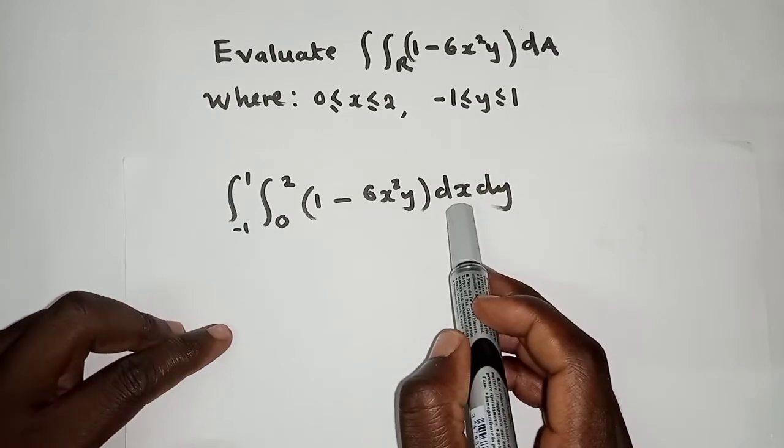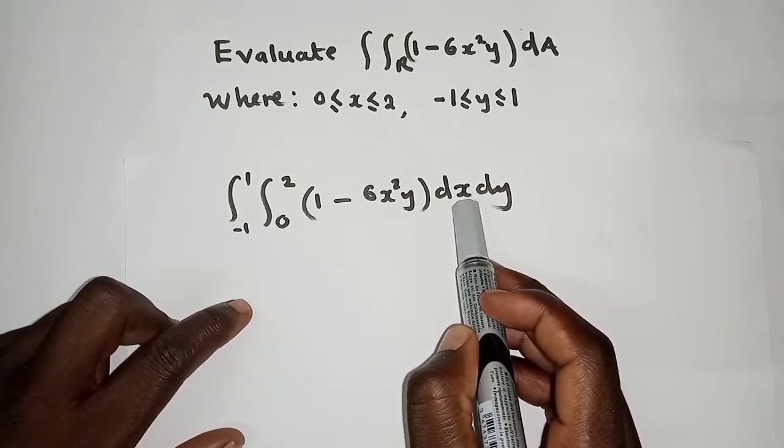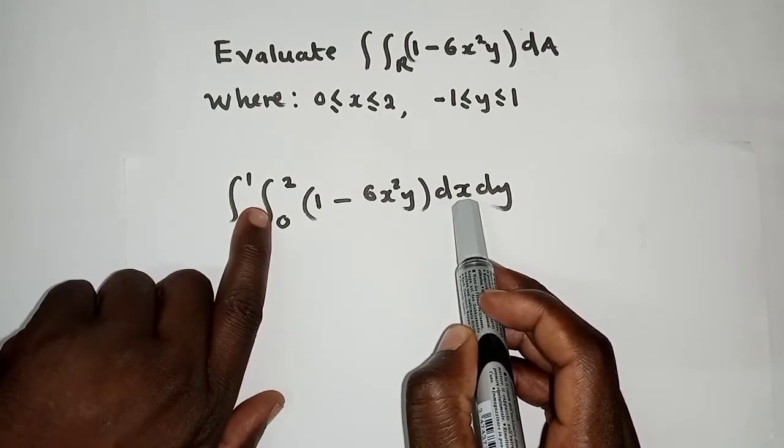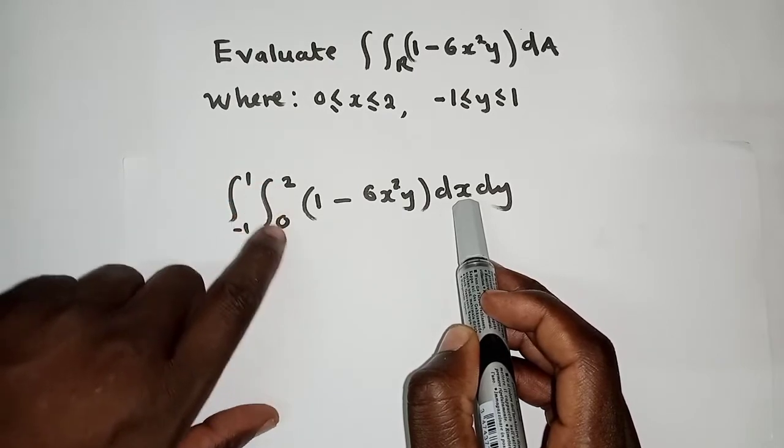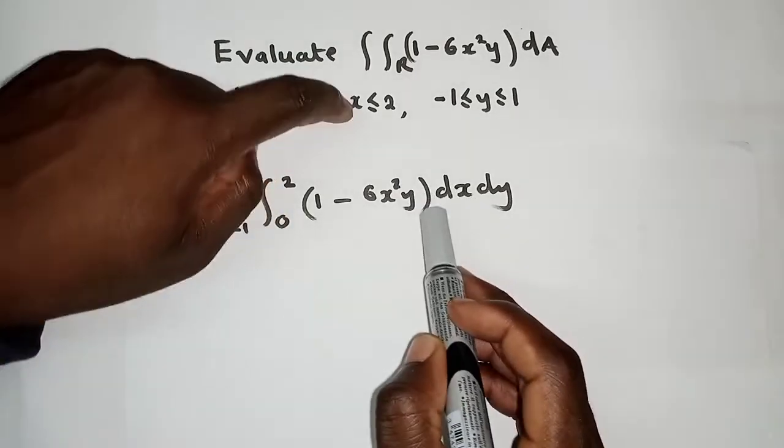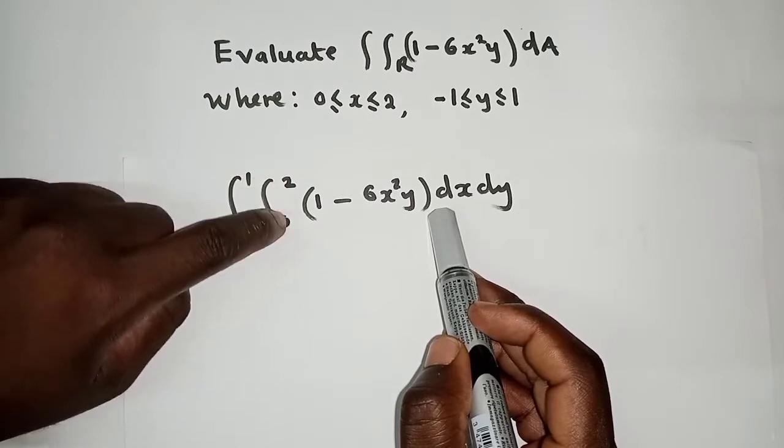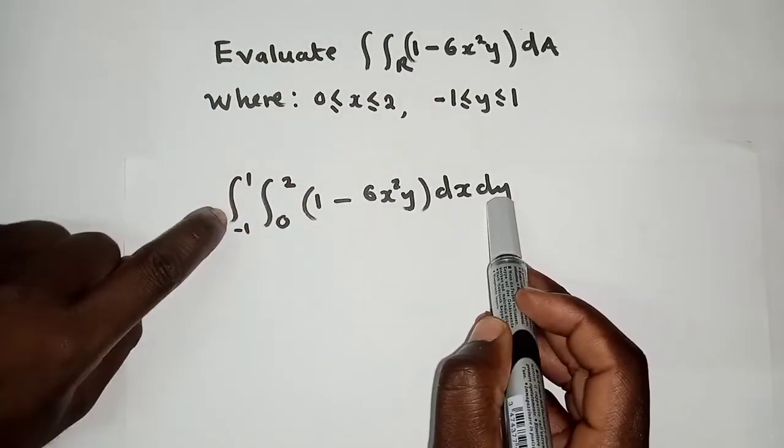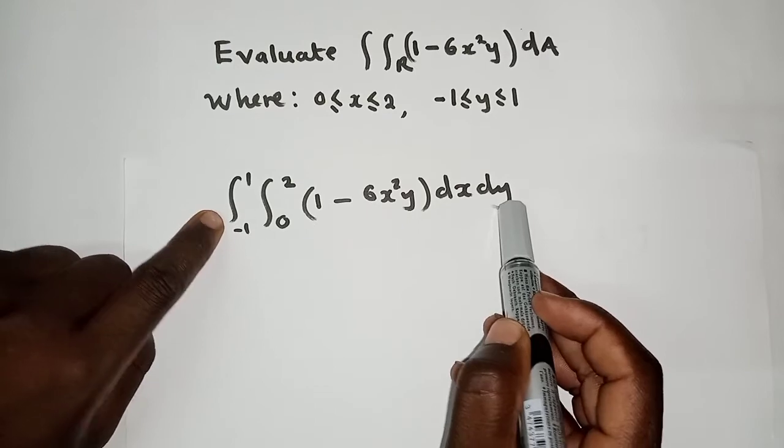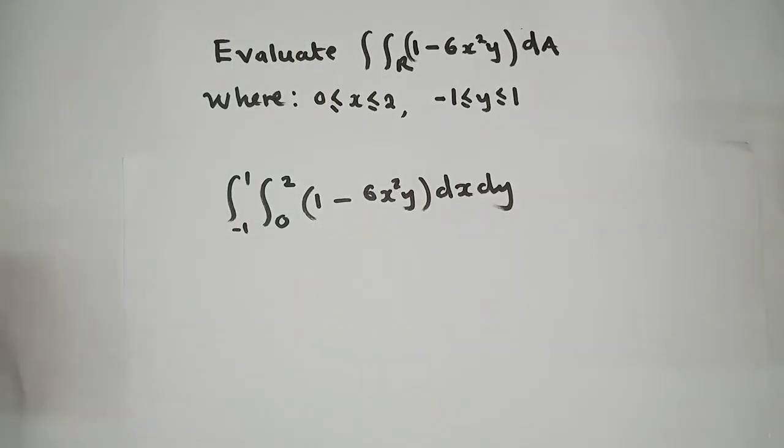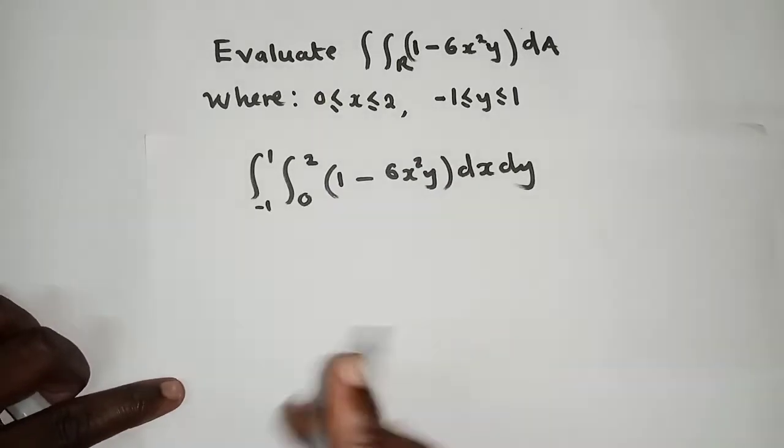This is where people make mistakes on which to put here. I've put the X, meaning I'm respecting X, and my inside limits are supposed to be for X. So for X here they are inside and then Y is outside. The Y must be outside. This is how you arrange or put your limits, or you pick what to respect first.